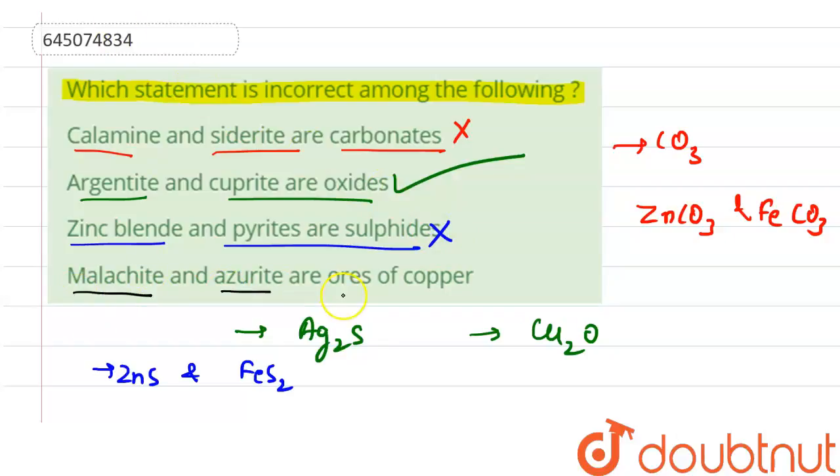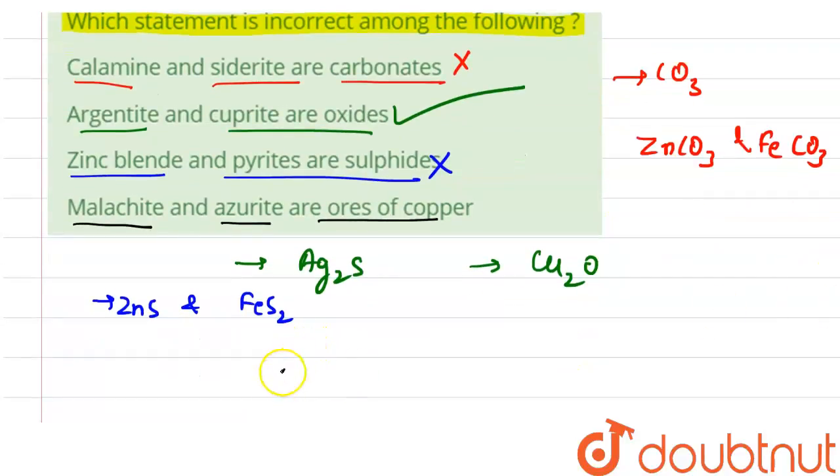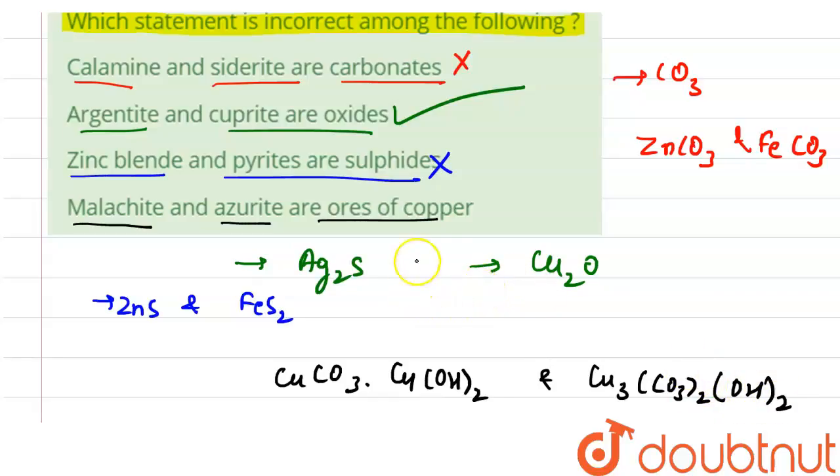Option four: malachite and azurite are ores of copper. Malachite has the chemical formula CuCO3·Cu(OH)2, and azurite has the chemical formula Cu3(CO3)2(OH)2. It contains the ore of copper. This statement is also correct. This is not the incorrect statement. So option two is the correct answer of this question.